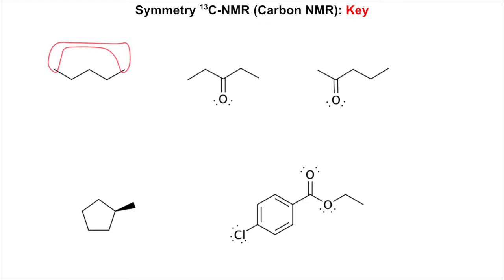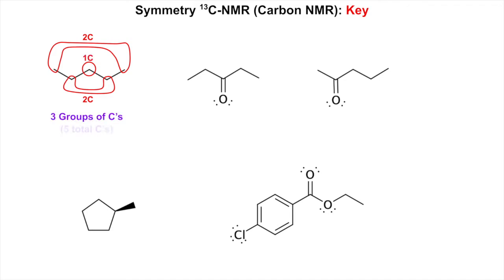Pentane: these two outer carbons are equivalent, just like their hydrogens were in the proton NMR — that's a two-carbon signal. Then there are the two next in toward the middle — they're equivalent, another two-carbon signal. Finally, the one right in the middle is its own signal. So this one's easy: three groups of carbons, five total carbons.